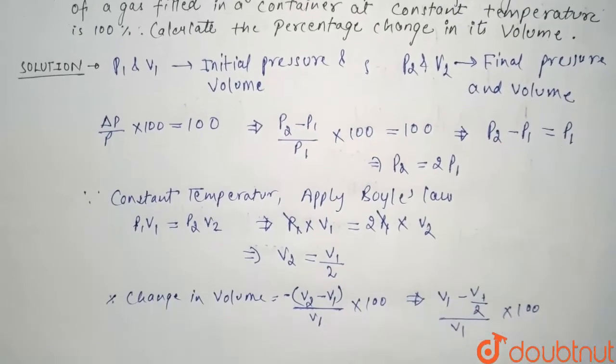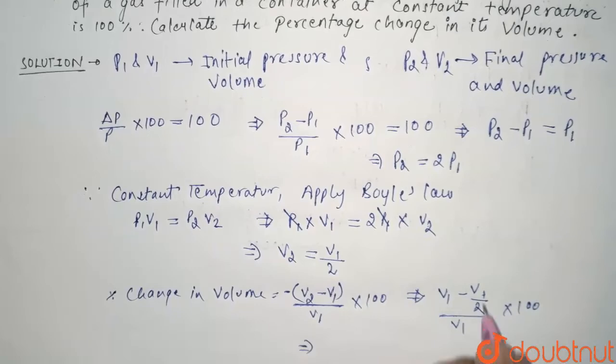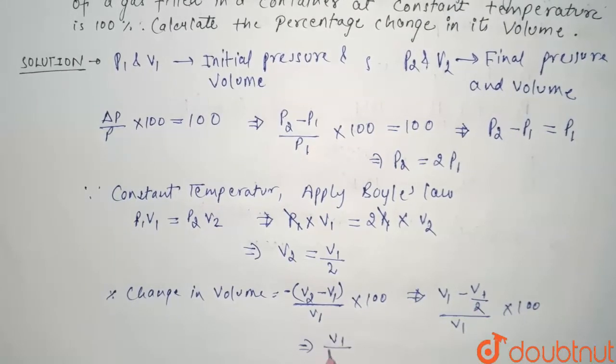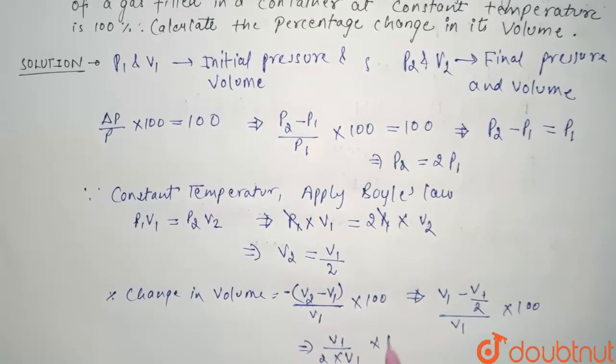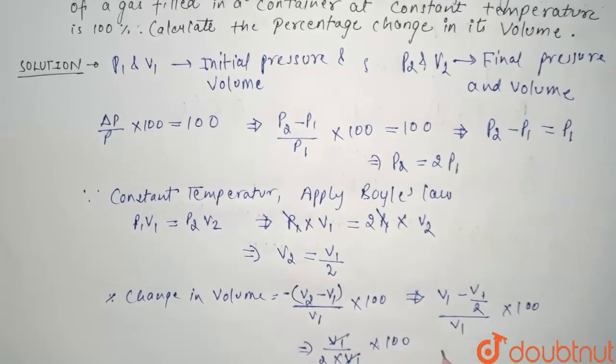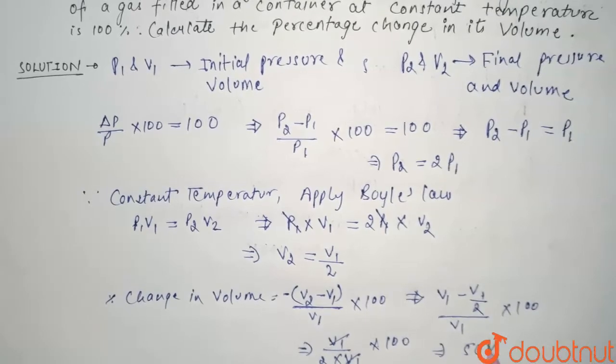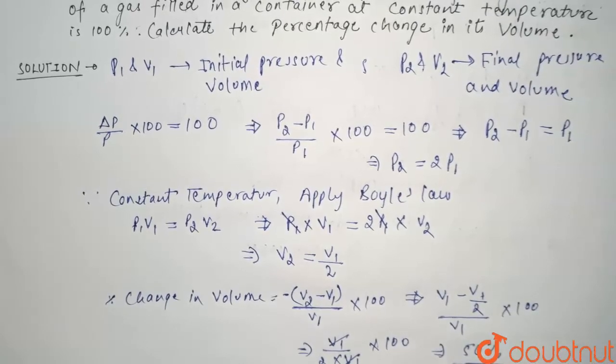So from here, this comes out to be V1 minus V1 by 2, that is V1 by 2, into V1 into 200. So here V1 and V1 will cancel and this comes out to 50%. So the percentage change in volume is 50%. So this is our final answer.